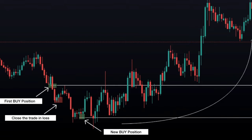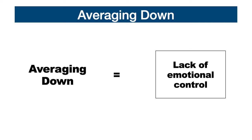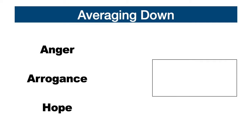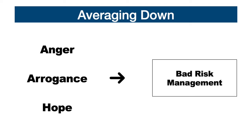This video was included in the psychology section because averaging down, for most traders, is caused by a lack of emotional control. Emotions such as anger, arrogance, and hope lead traders, especially beginners, to open multiple positions with incorrect risk management, trying to make the big deal by recovering their losses.